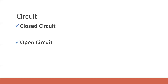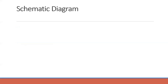All circuits basically have three important fundamental components: a voltage source, a conductive path, and a load resistor. The voltage source — most often a battery — drives current to flow in the circuit. The conductive path provides the route for the flow of electricity. The load consumes the power. These three elements make up whether a circuit is closed or open. Moving from circuit to schematic diagram.